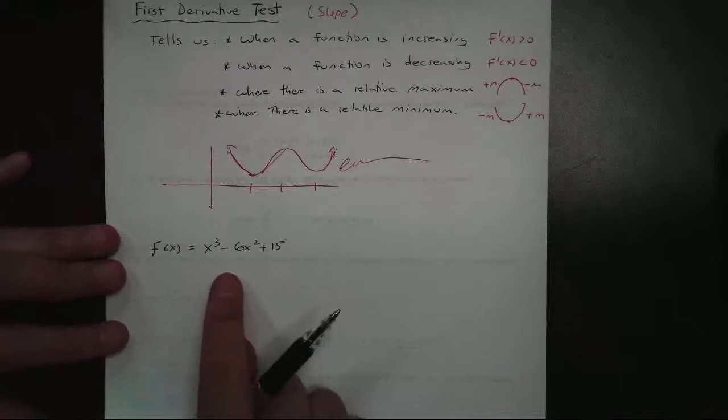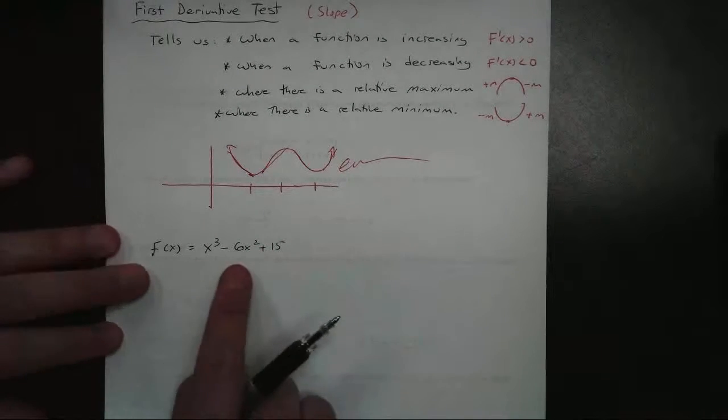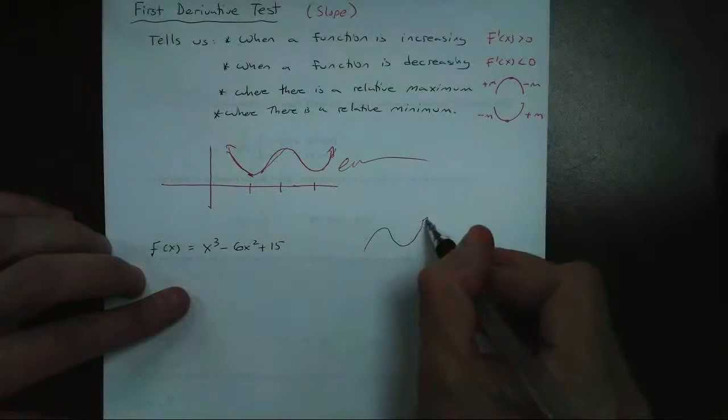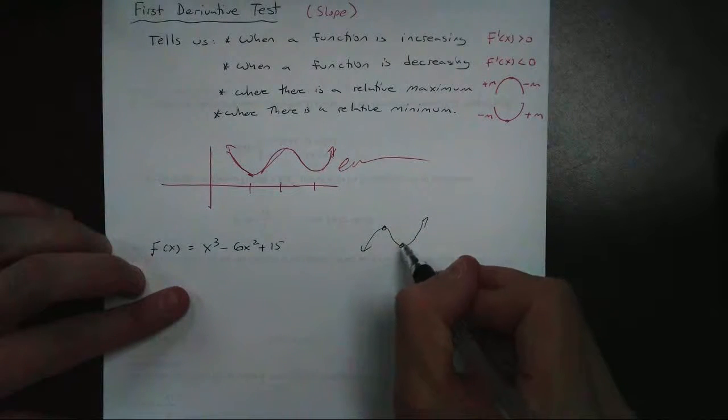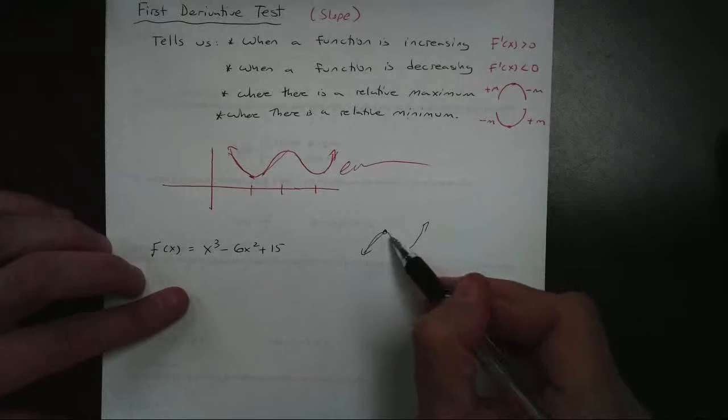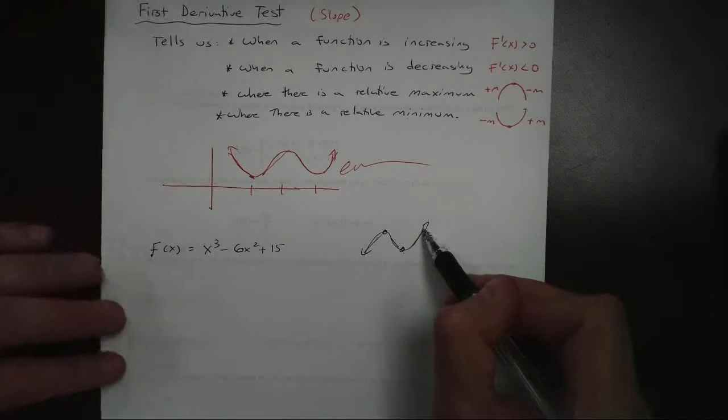And I want to find out where this function is increasing, decreasing, if it has any relative maximums and minimums. Now if you know from pre-cal, this is a cubic function. So it's going to look something like this. So we know it's going to have a maximum and a minimum value. We also know there's going to be parts where it's increasing, decreasing, and increasing again. But we want to find out specifically where.